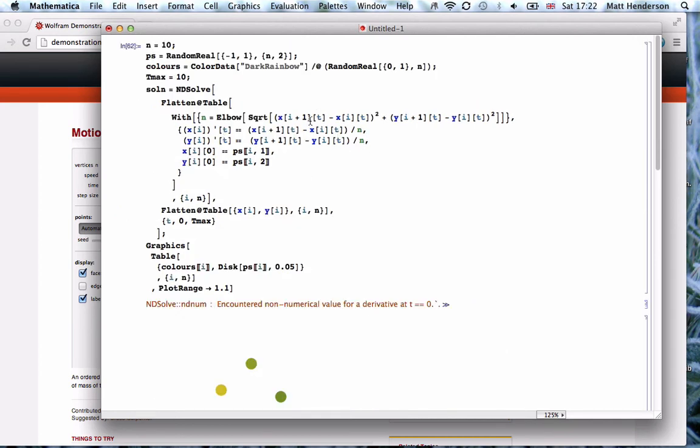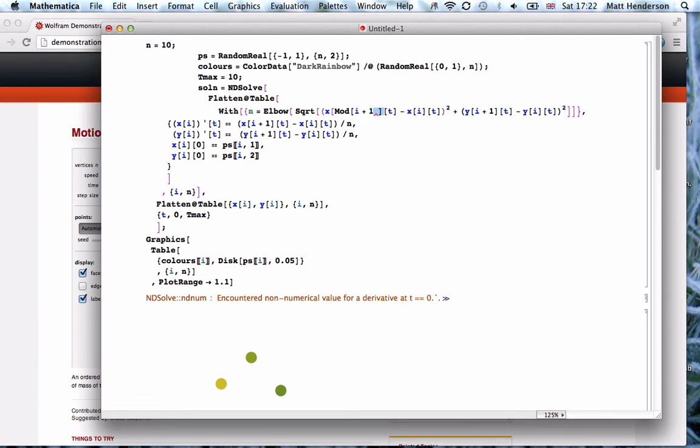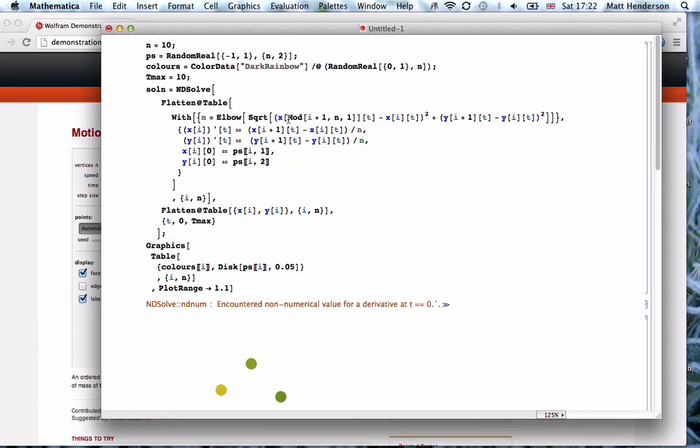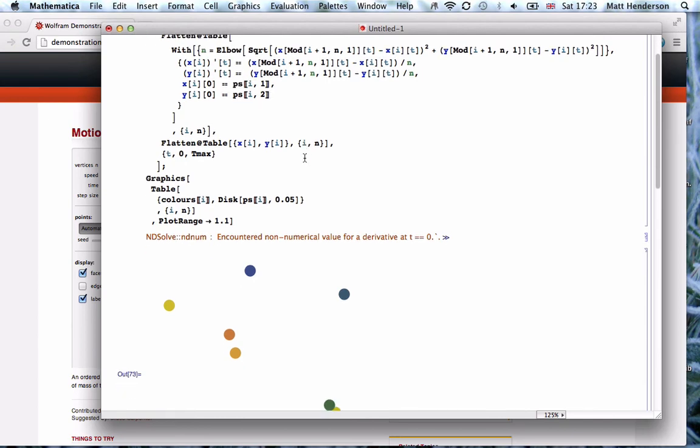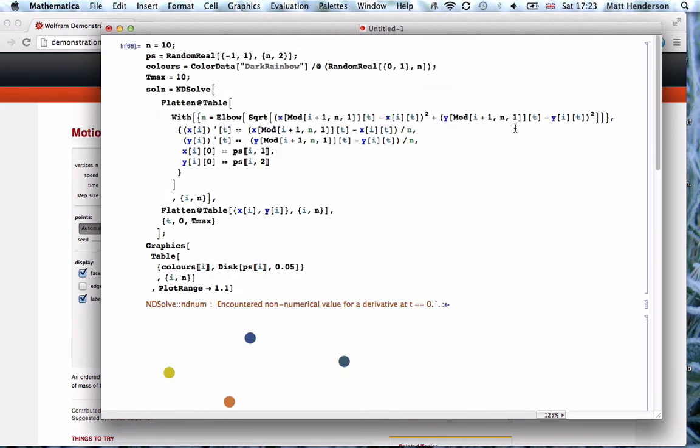I'm just gonna cut recording and be right back once I've figured out what the problem is. I suspect the problem is that when i equals 10 we're putting in 11, but we want it to wrap around so the last point is moving towards the first point. The way to do that is to use modular arithmetic, so instead of i plus 1 we have Mod[i+1, n, 1] so it doesn't say zero ever. Putting that in here, that still did not solve the problem.